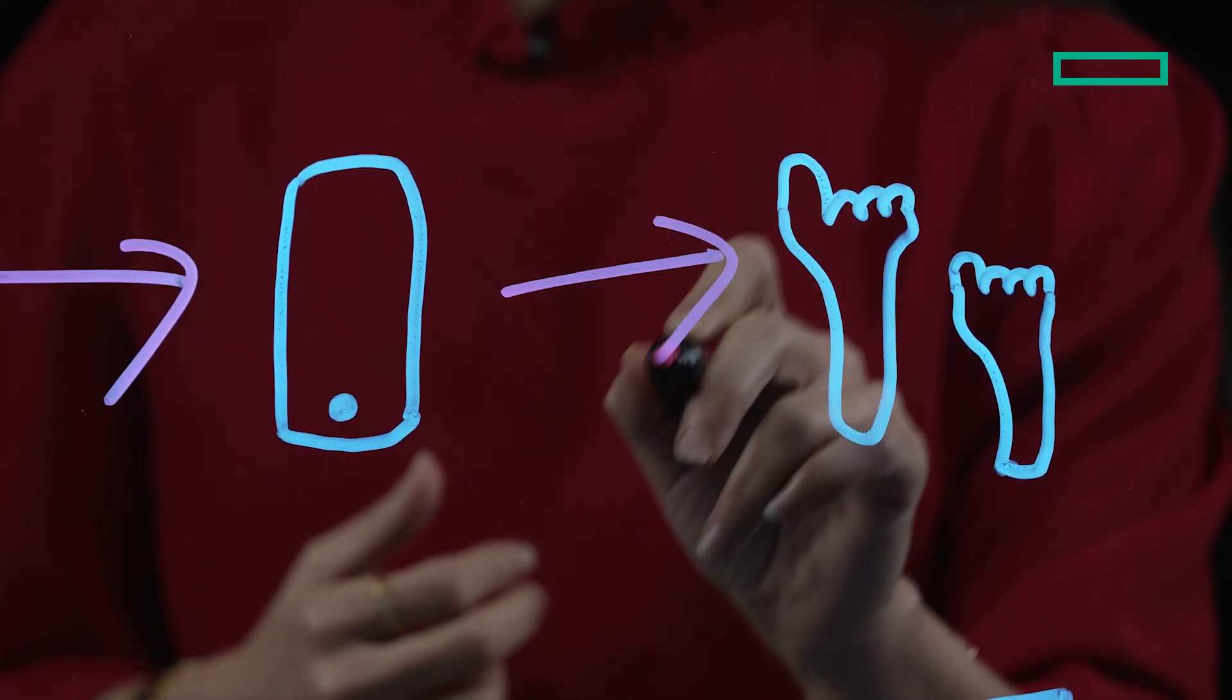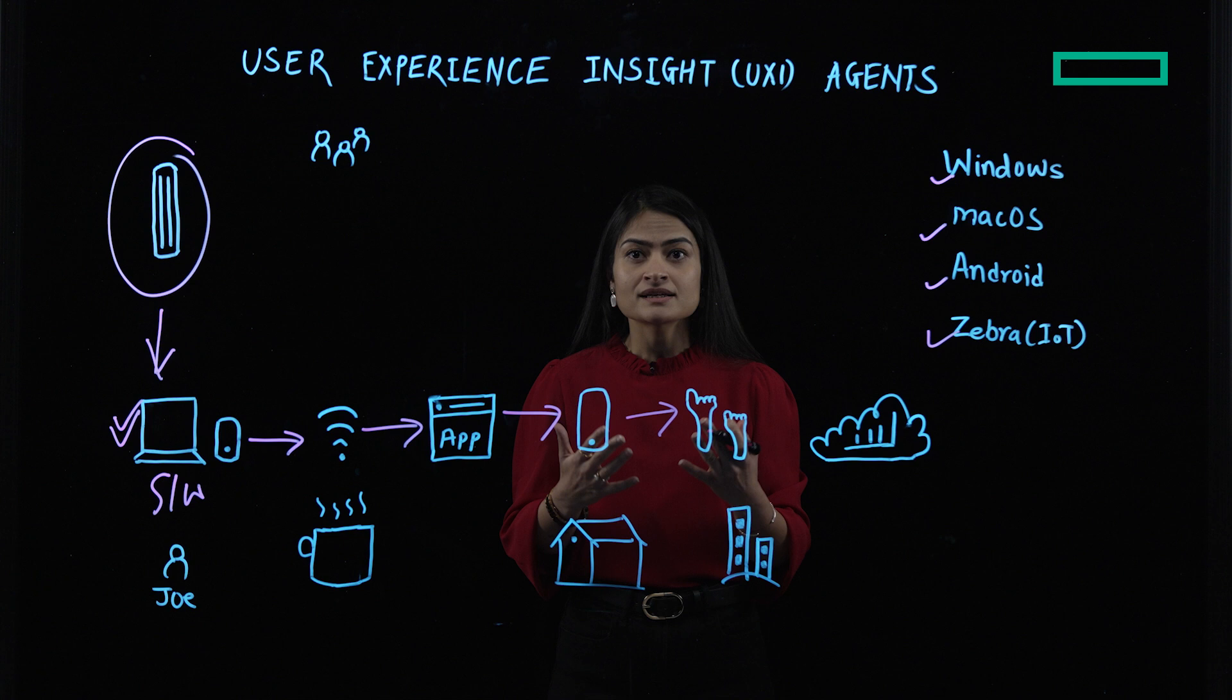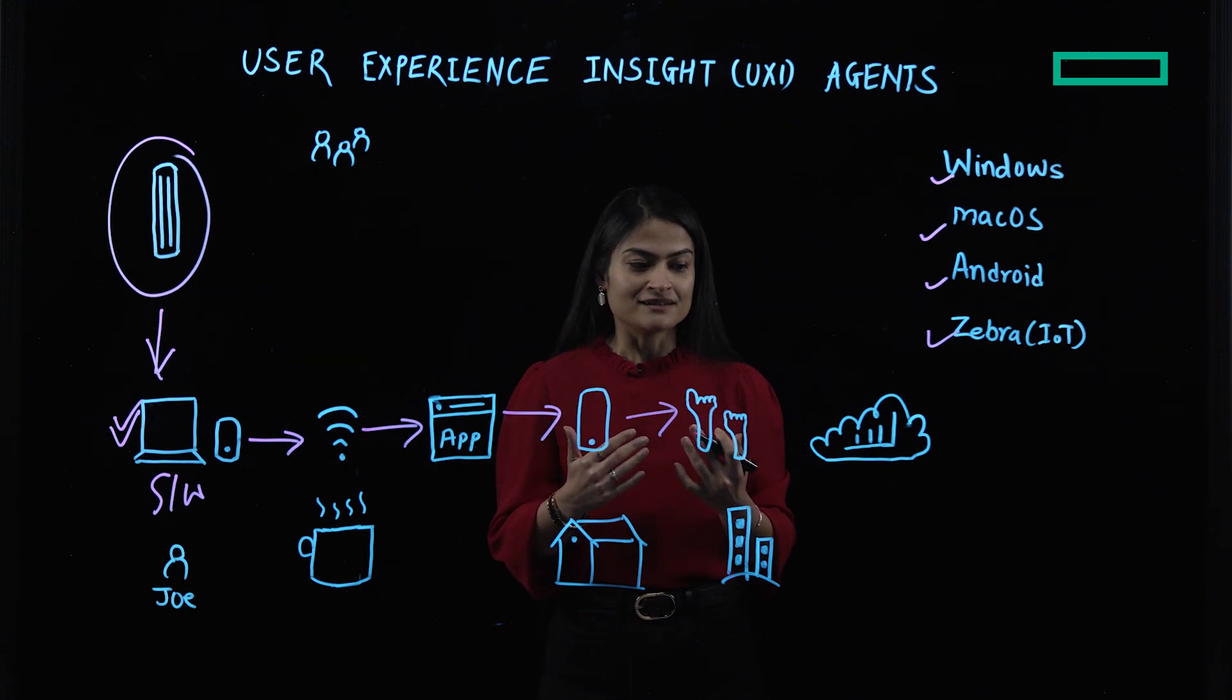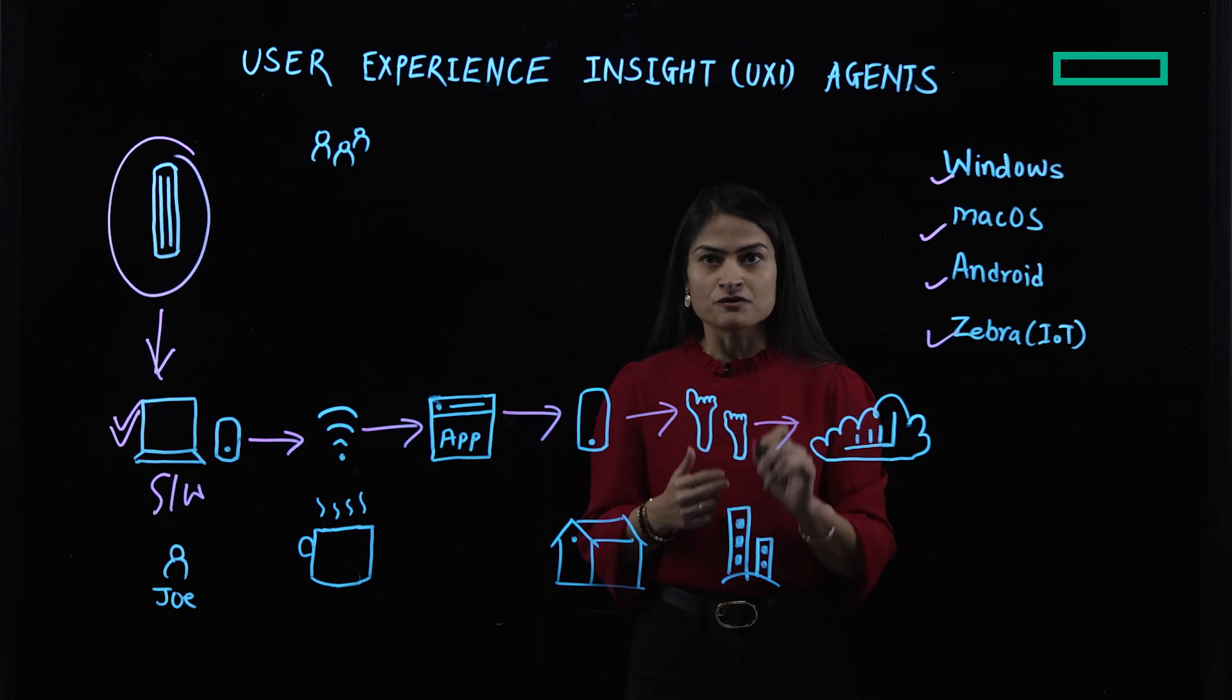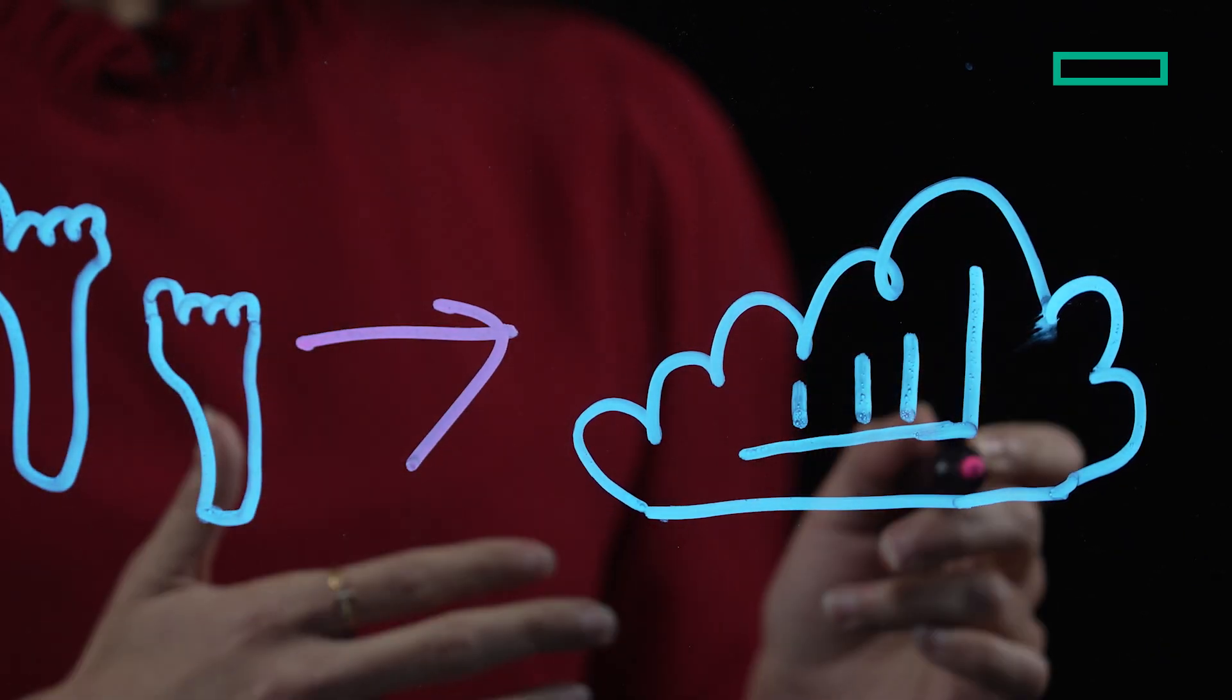Now, because our agent is moving along with the user, it collects the roaming events and shows you any roaming issues as identified by the user itself. And all of this information is shown on our cloud-hosted intuitive UXI dashboard.